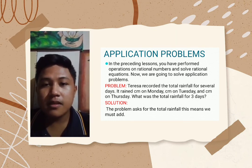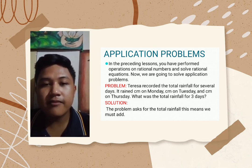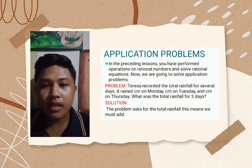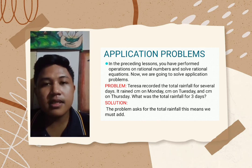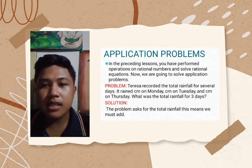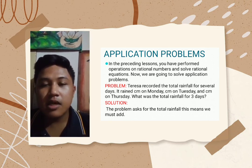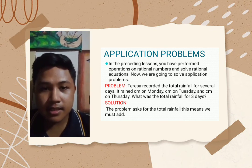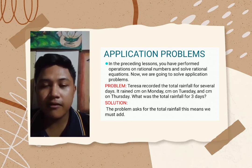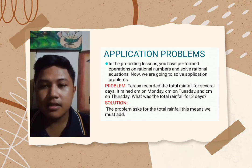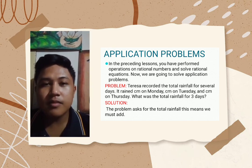Example: Teresa recorded the total rainfall for 7 days. It rained some centimeters on Monday, and also on Tuesday and on Thursday. What was the total rainfall for those 3 days? Solution: the problem asks for the total rainfall, which means we must add.